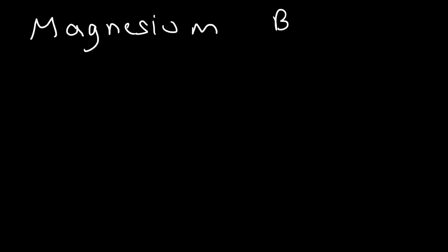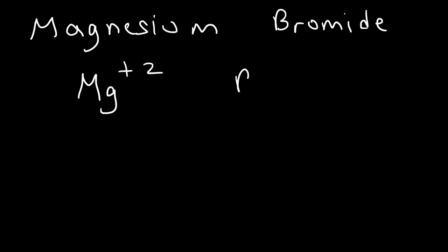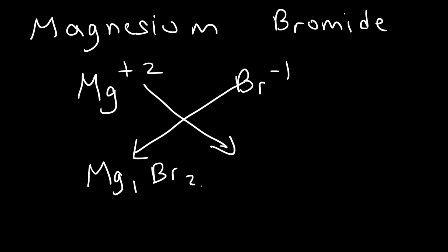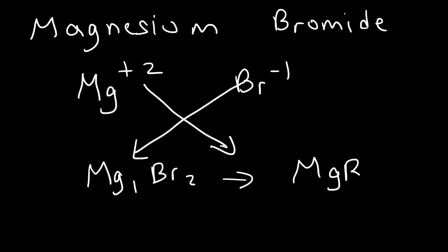Magnesium bromide: magnesium, like calcium, is an alkaline earth metal found in group 2 and has a plus two charge. Bromide is a halogen that has a minus one charge. Notice that this time the charges are not the same — they're different. In this situation you want to exchange the charges as subscripts and reverse them. The plus two becomes the subscript for bromine, and the minus one becomes the subscript for magnesium, giving Mg1Br2. The negative sign does not carry over, and since we don't write a subscript of one, it simplifies to MgBr2.